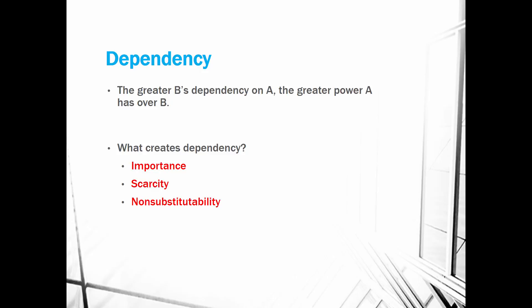People are dependent on an individual if what they have is important to someone. If nobody wants what you've got, it's not going to create dependency. So to create dependency, what you control must be perceived as important. The second point is scarcity — a resource needs to be perceived as scarce to create dependency. If you're the only one who knows something and that knowledge is scarce, more people will be dependent on you. The last is non-substitutability — the more a resource has no viable substitutes, the more power control over that resource provides.